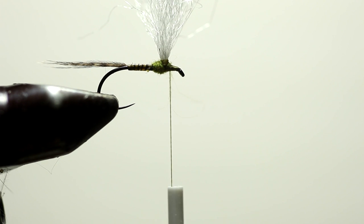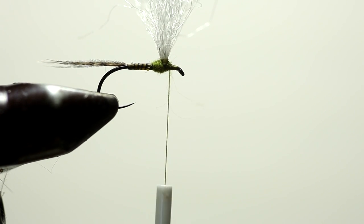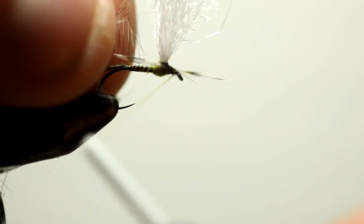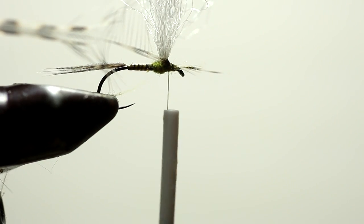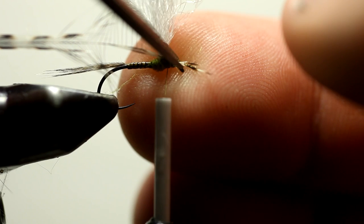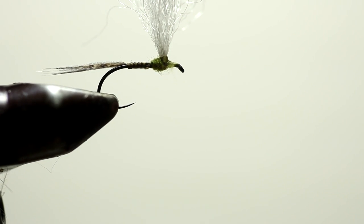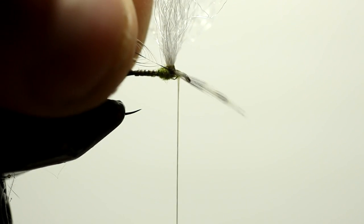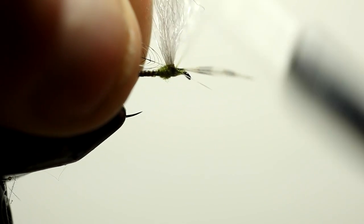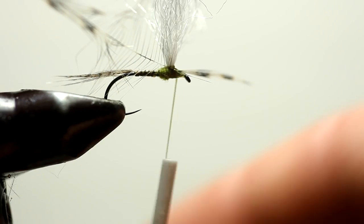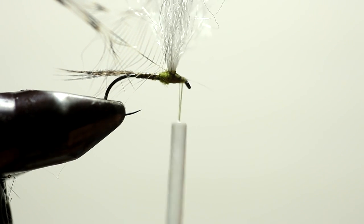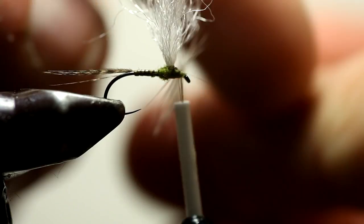Now we're going to tie in the hackle. We're going to use grizzly hackle. So here I'm going to tie in the end of the feather facing the eye of the hook. I'm going to snip this excess right here. Now I'm going to take the hackle. We're going to wrap it counter clockwise.